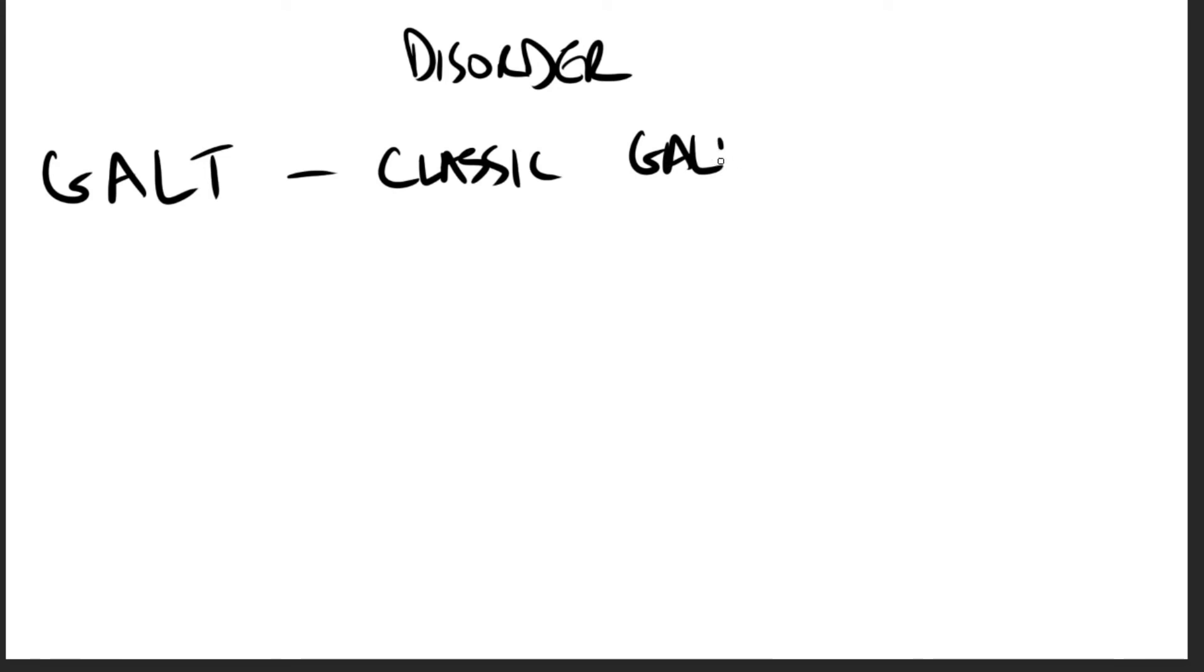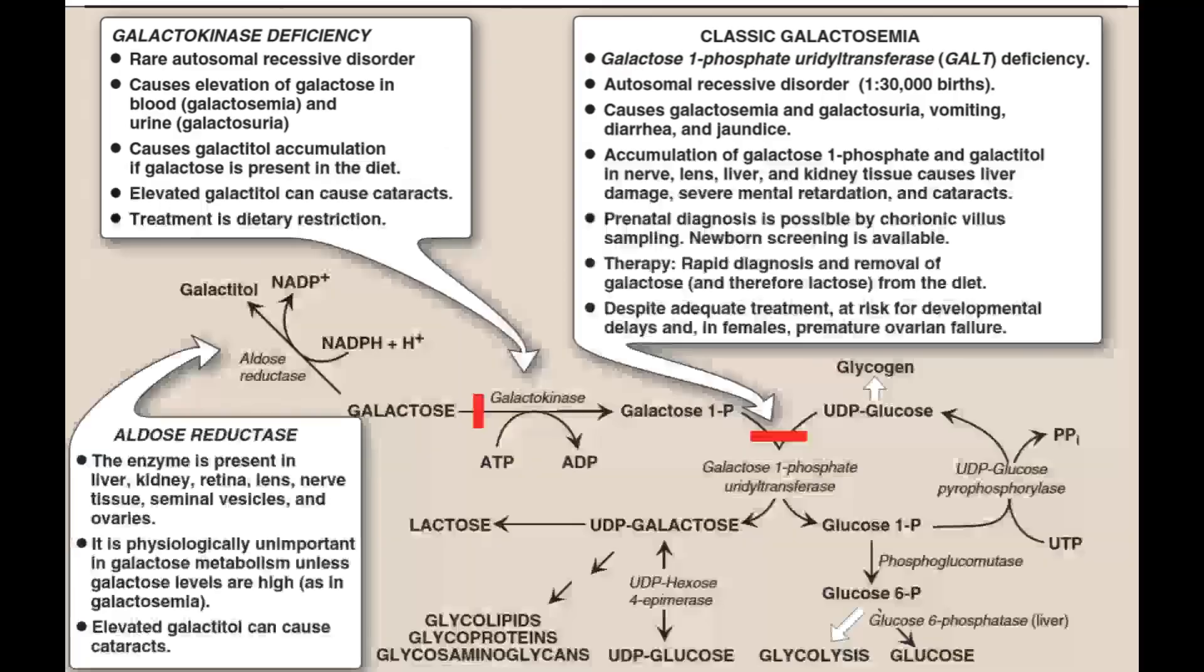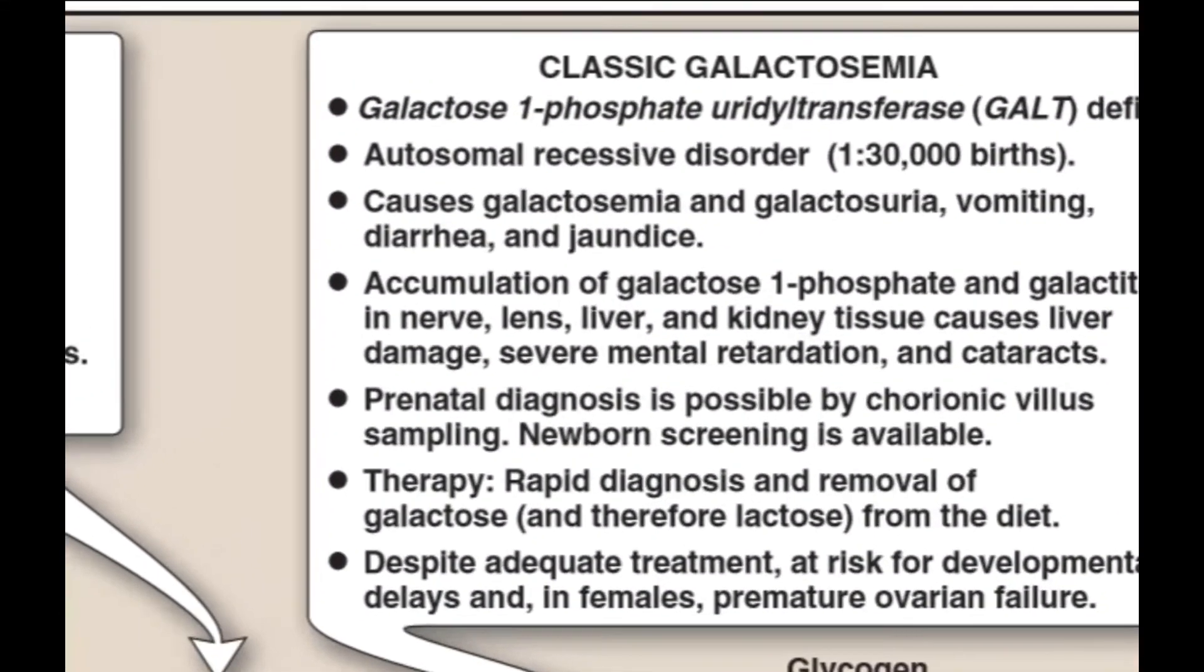In this disorder, galactose 1-phosphate and therefore galactose accumulate in cells. Starting with classic galactosemia, it is a GALT deficiency that can cause galactosemia, galactosuria, vomiting, diarrhea, and jaundice.